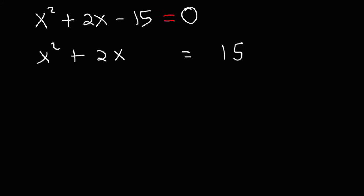The next thing we need to do is complete the square. So what you need to do is take the middle coefficient and divide it by 2, and then you're going to square it. So 2 divided by 2 is 1. Thus, we're going to add 1 squared to both sides of the equation. Whatever you do to the left side, you must also do to the right side so that the value on both sides of the equation remain the same.